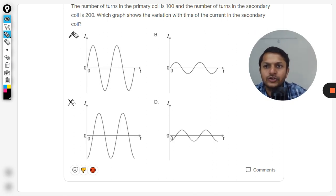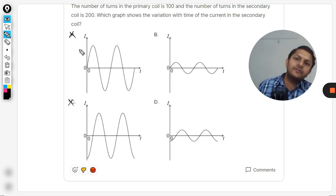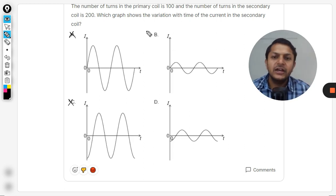A is wrong, C is wrong. So we are sure now with the information that we have, definitely either B is correct or D is correct.